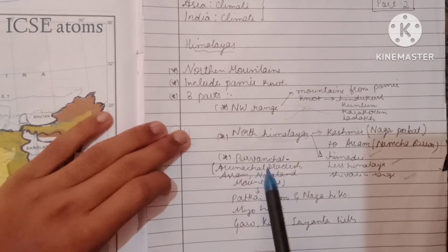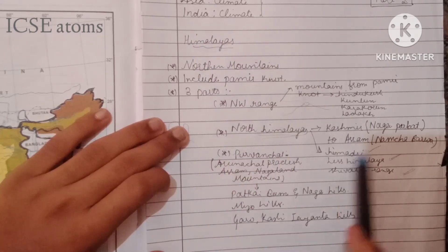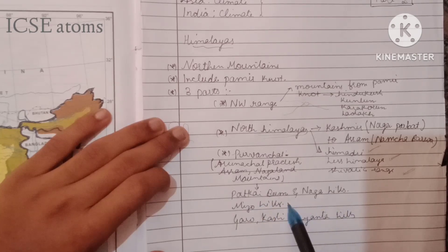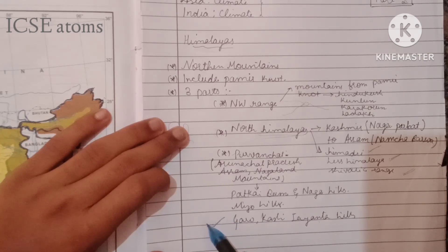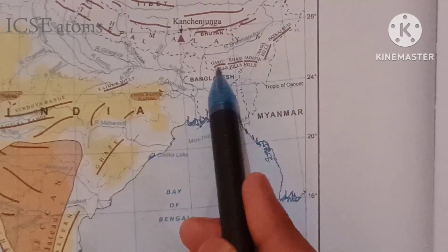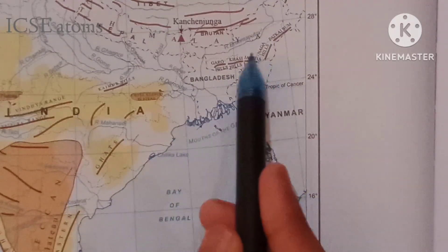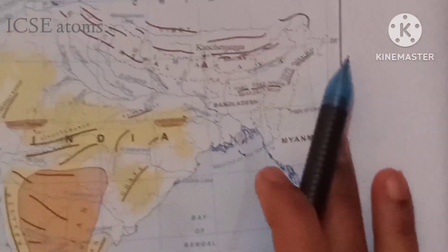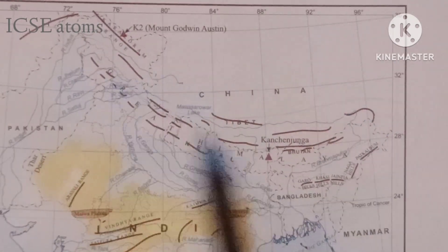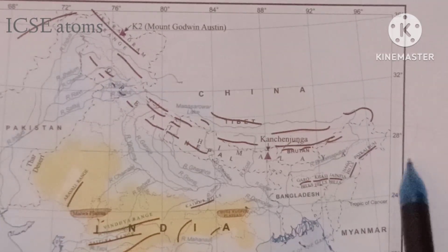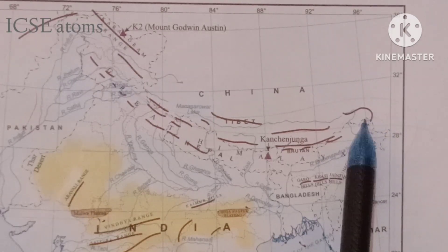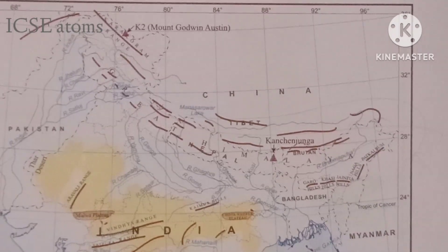Purvanchal includes those Himalayan ranges which pass through the states of Arunachal Pradesh, Assam, and Nagaland. The mountain ranges include the Patkai Bum, Naga Hills, Mizo Hills, and the Garo, Khasi, and Jaintia Hills. These hills are important because they are helpful in capturing rain and giving heavy rainfall to Meghalaya. The Northern Himalayas start at Nanga Parbat in Kashmir and end at Namcha Barwa in Assam.